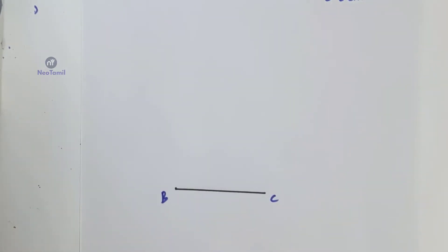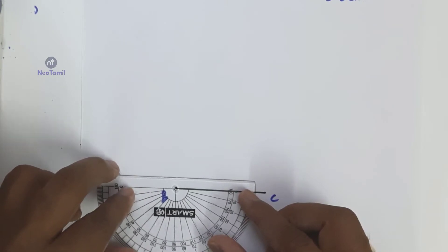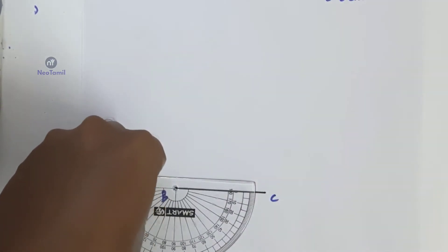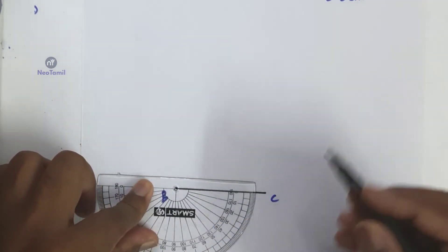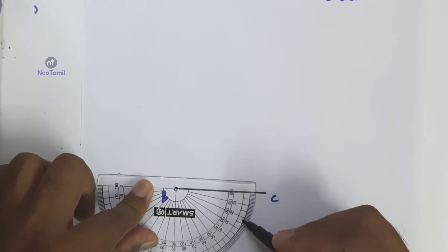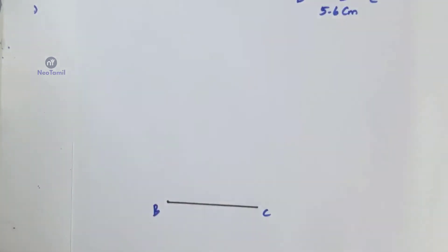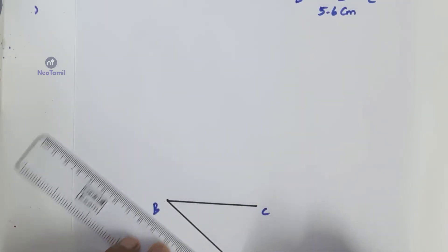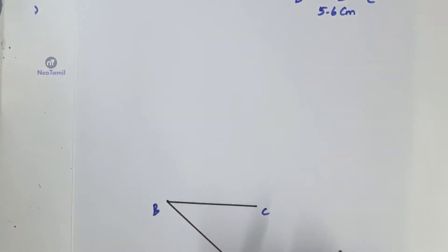The vertical angle A is equal to 40 degrees. At B, draw a ray BE such that angle CBE is equal to 40 degrees. Measuring with the protractor: 0 degrees, 10 degrees, 20 degrees, 30 degrees, 40 degrees. So angle CBE equals 40 degrees, which equals angle A equal to 40 degrees.